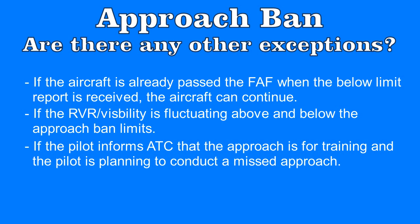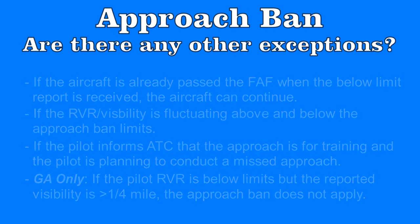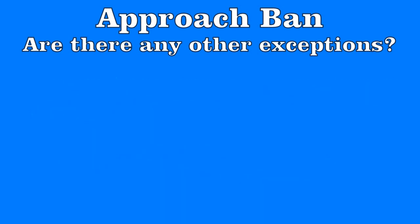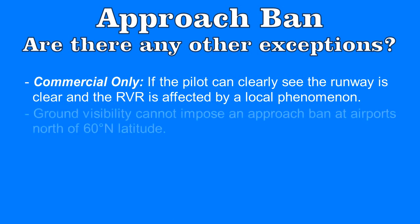An additional exception only available for GA aircraft using the GA approach ban is that if the RVR is below the limits but the reported visibility is one quarter mile or greater, then the approach ban does not apply. For commercial operators, if a pilot can clearly see that the reported RVR or visibility is being affected by a localized phenomena and they can see that the visibility along the runway is greater than the approach ban limitation, they can continue the approach. And one final exception: ground visibility cannot cause an approach ban for airports north of 60 degrees north latitude, as alternate airports in that area are so rare that pilots must be allowed to attempt an approach if they judge there is a reasonable chance of success.